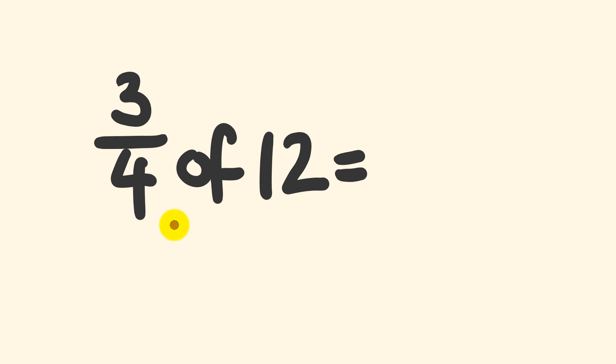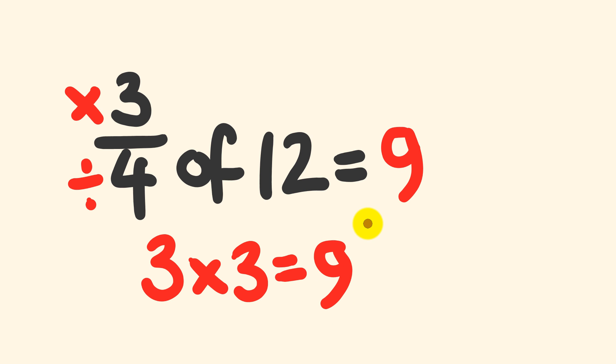Now the way I do this is fairly simple. Three quarters of 12. A quarter of 12, well that's going to be 12 divided by 4. 12 divided by 4 is equal to 3. Then what I do is I say one quarter of 12 is equal to 3. Well three quarters of 12 is going to be three times as much. Three times three, we would have an answer of nine. Three quarters of 12 is equal to nine.